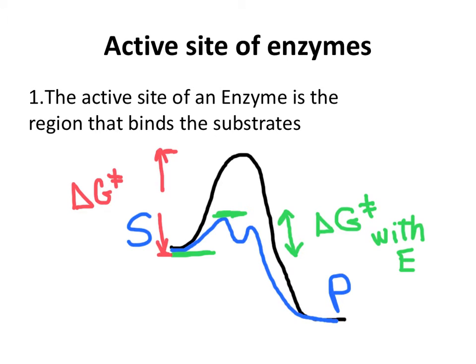Enzymes increase the rate of chemical reactions by decreasing the energy of the transition state. That is, the barrier that needs to be overcome to transform substrates to products is decreased. In the process, there is a formation of a complex between the enzyme and the substrate, which is called the ES-complex.